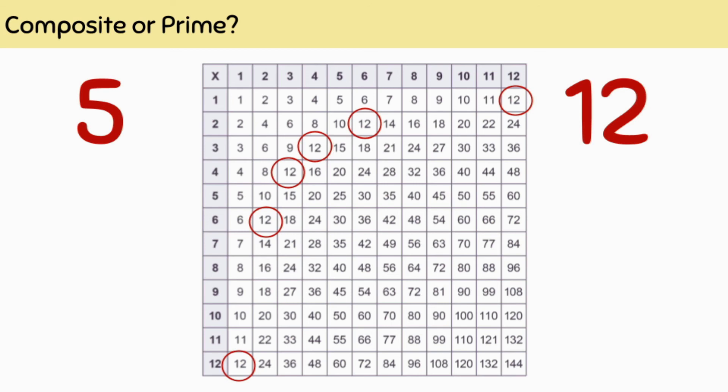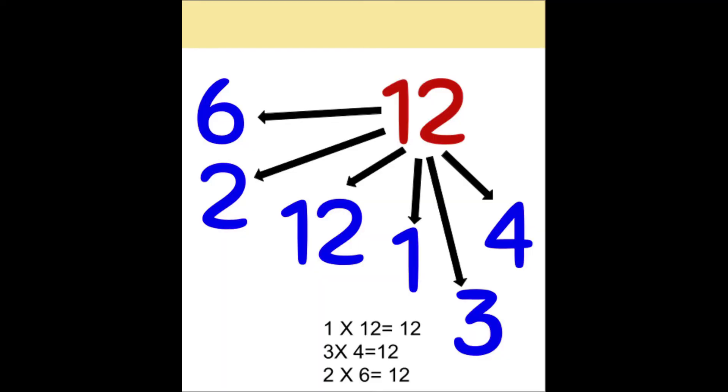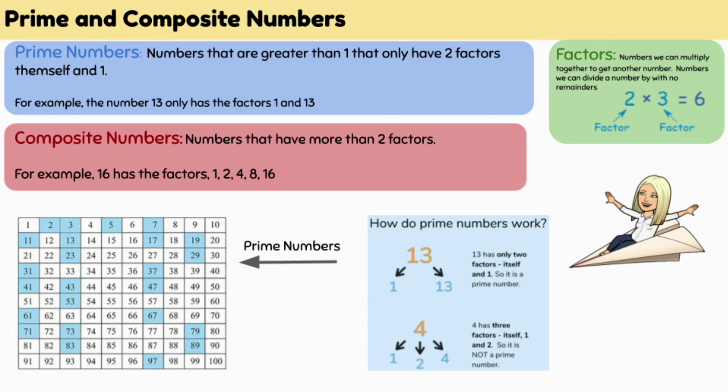So 12's factors are 1, 12, 2, 6, 3, and 4, making it a composite number. If we use the division method, we can see that 12 can be divided evenly into 2, 6, 3, 4, 1, or 12 groups.